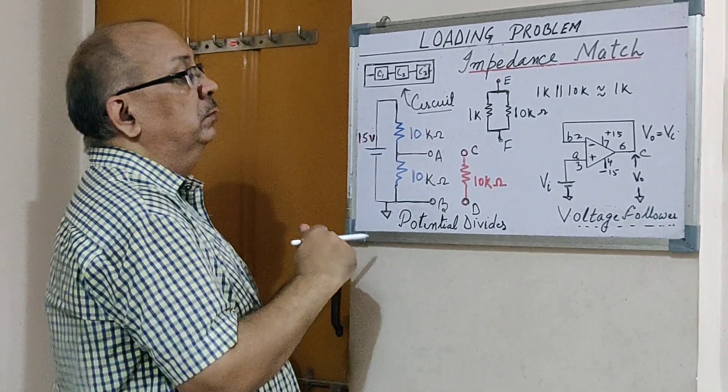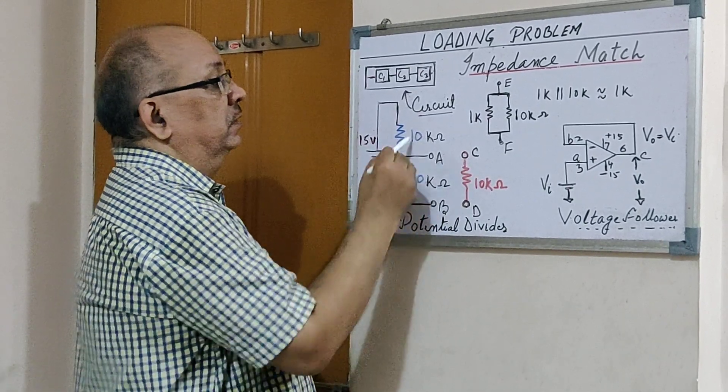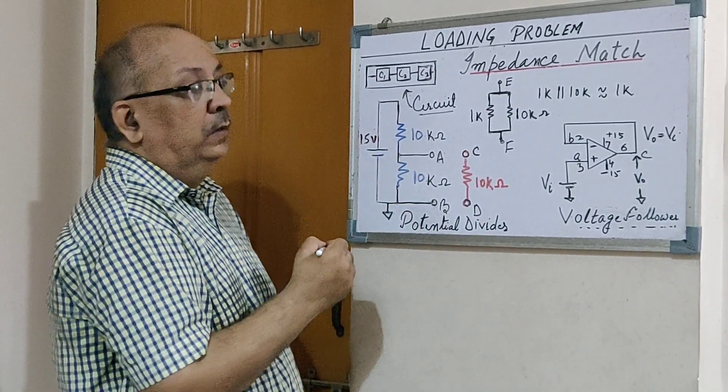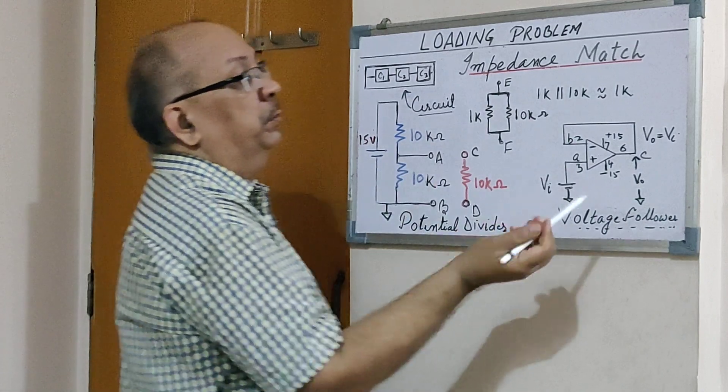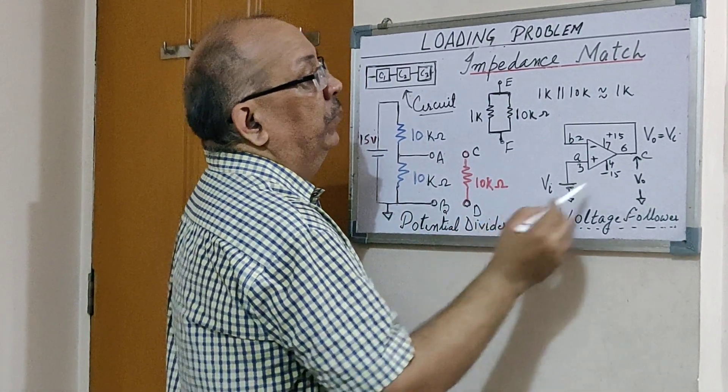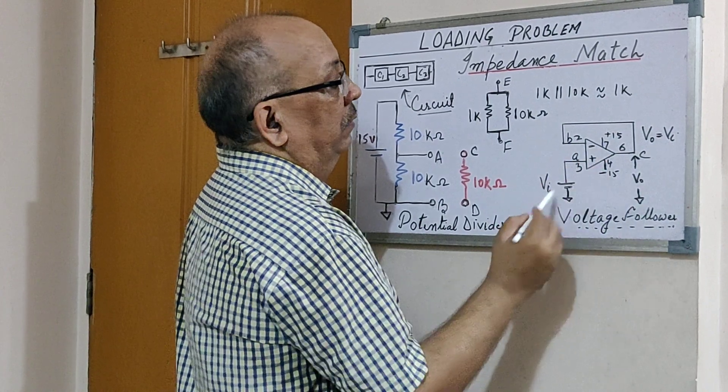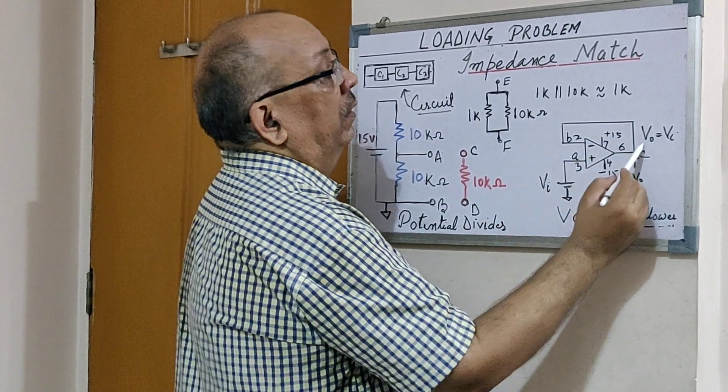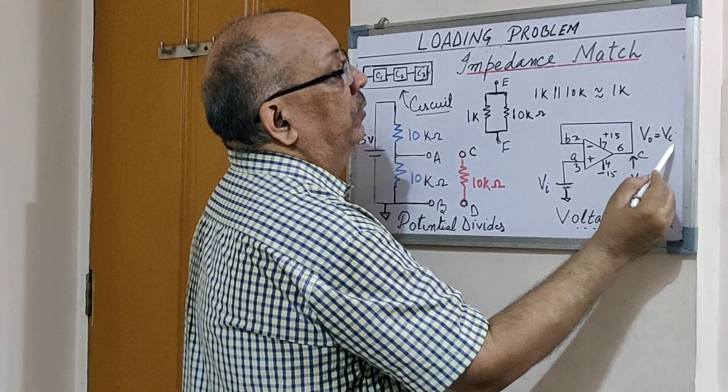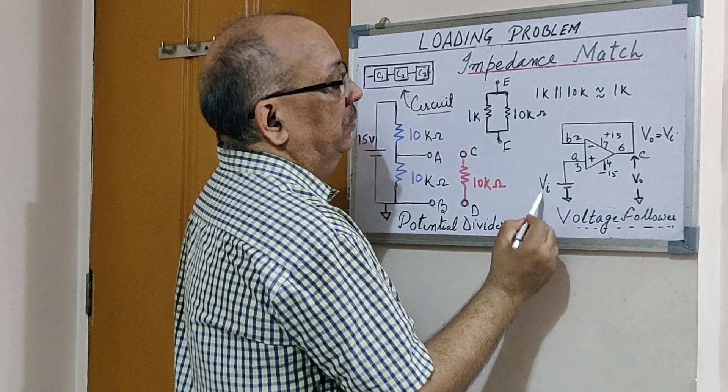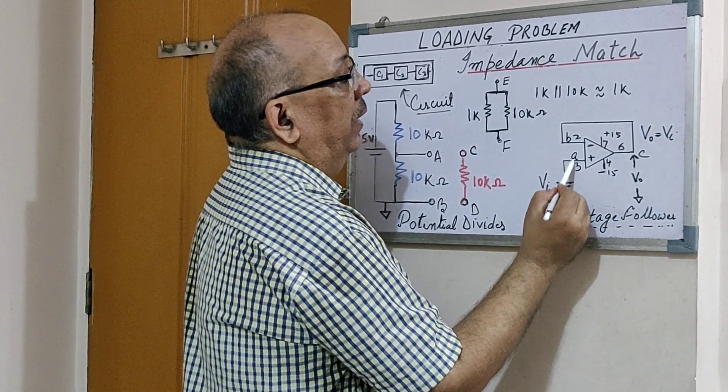V-out will always be equal to V-in. The concept is, if it is V-in at the positive terminal, it will be V-in at the inverting terminal following non-inverting configuration, so it will remain V-in. There is no resistance between this point and output, so it